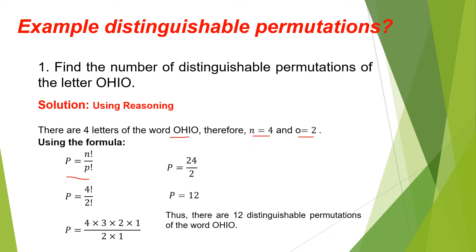So, 4 factorial over 2 factorial. Simplifying: P equals 4 times 3 times 2 times 1 over 2 times 1, equals 24 over 2, equals 12. Thus, there are 12 distinguishable permutations of the word O-H-I-O.